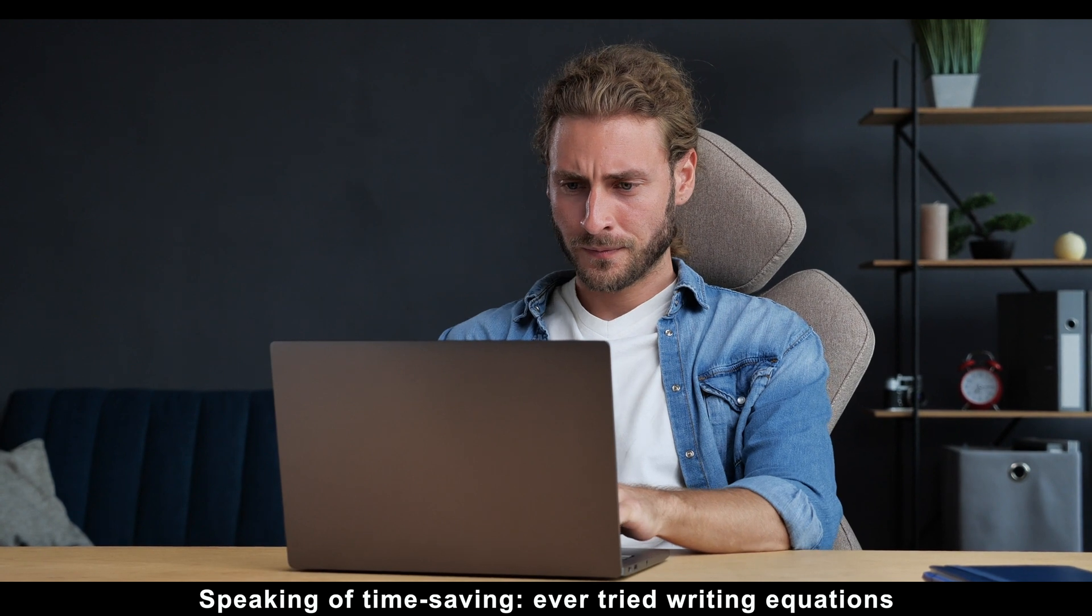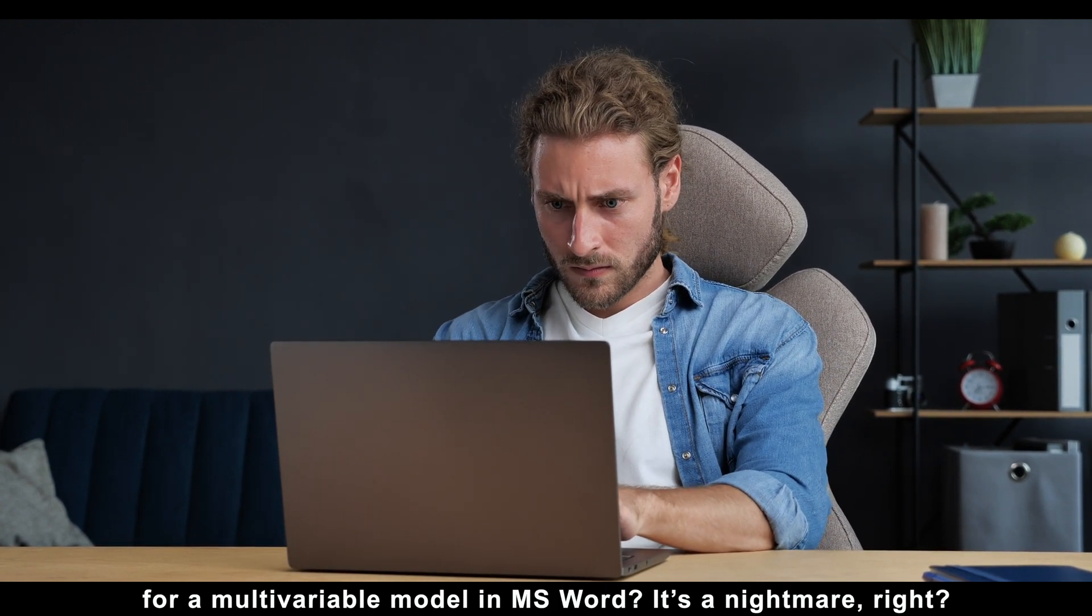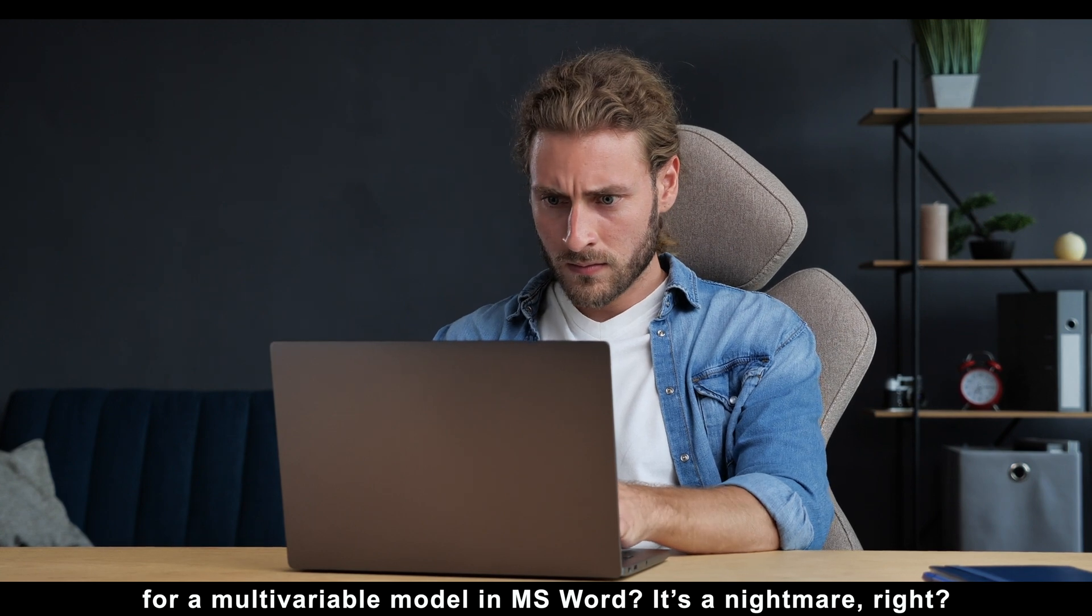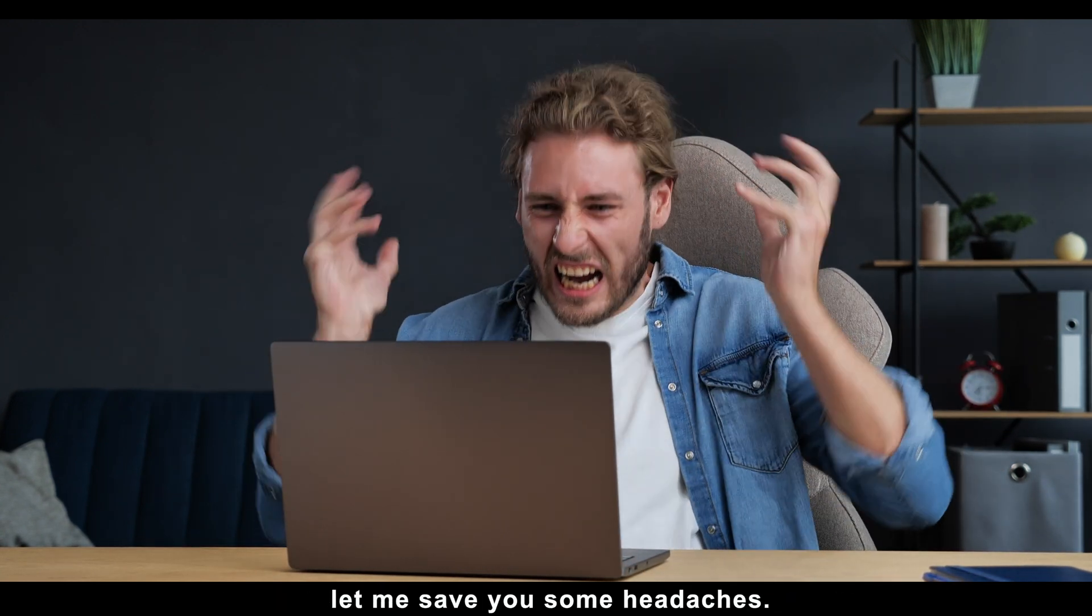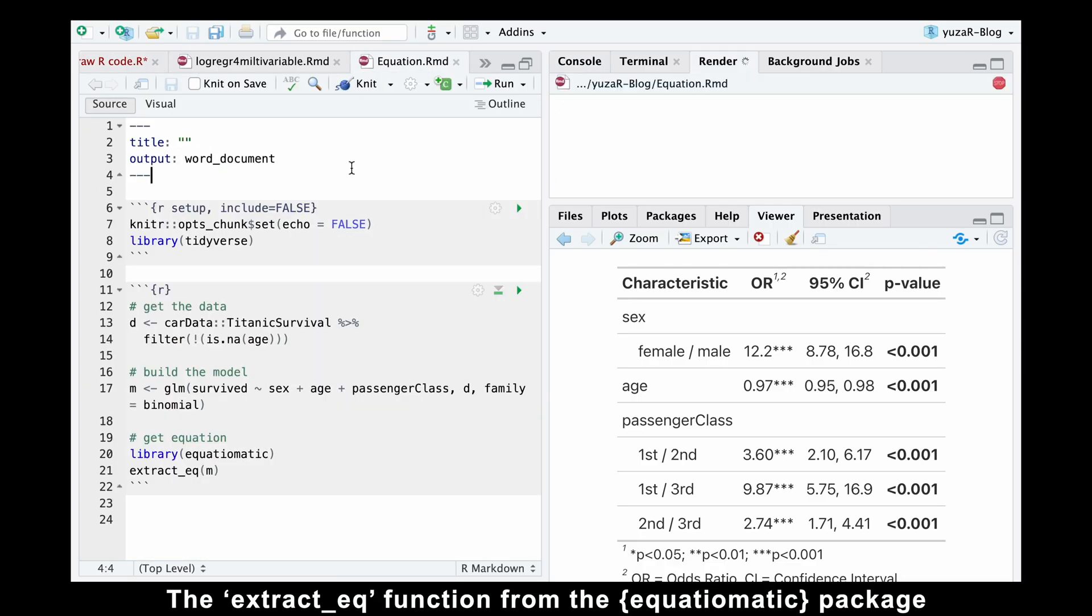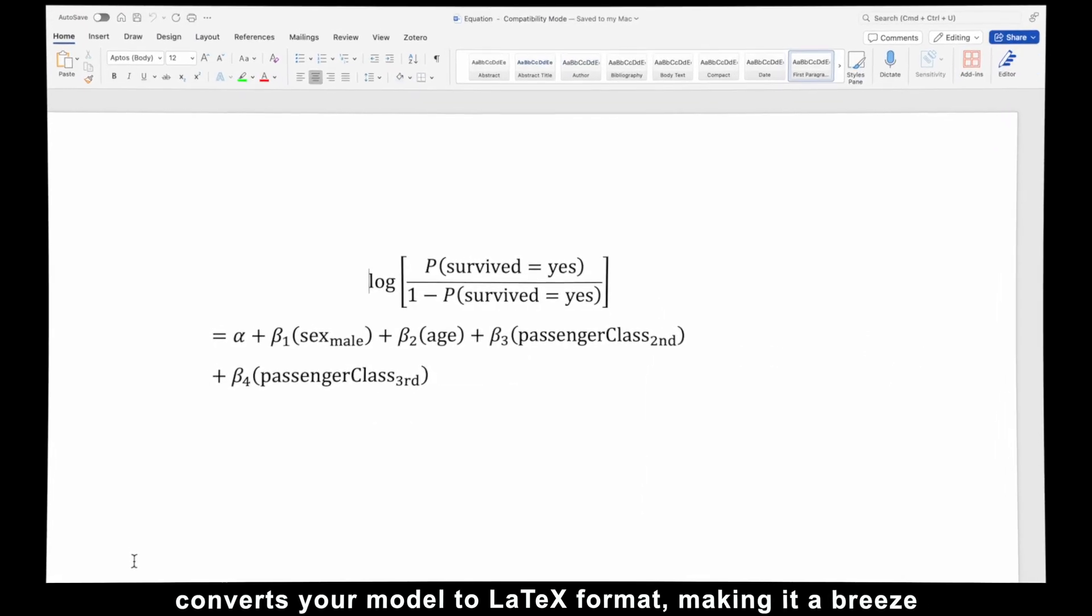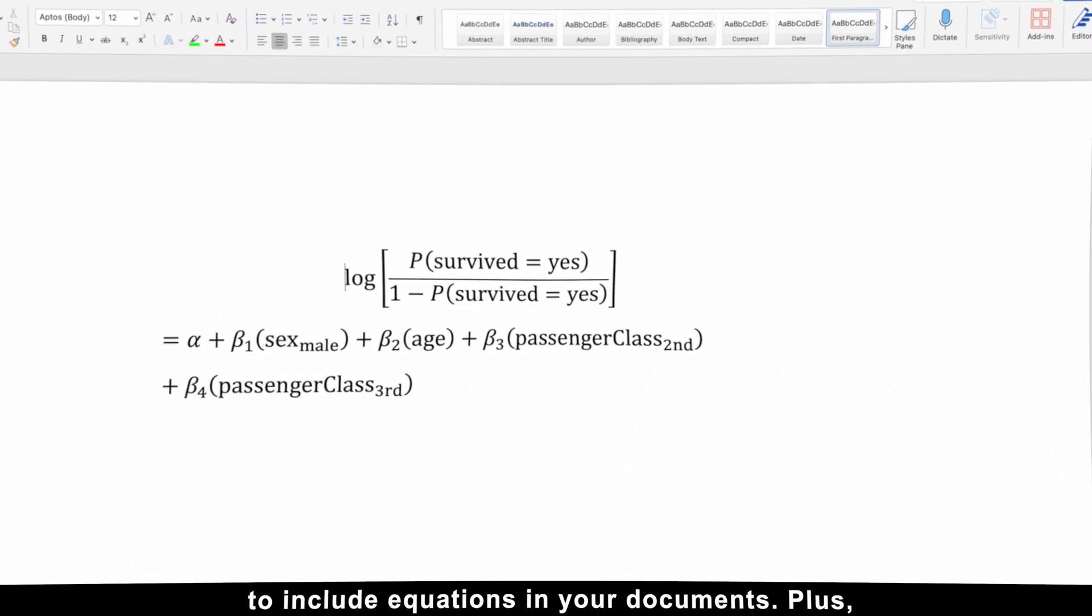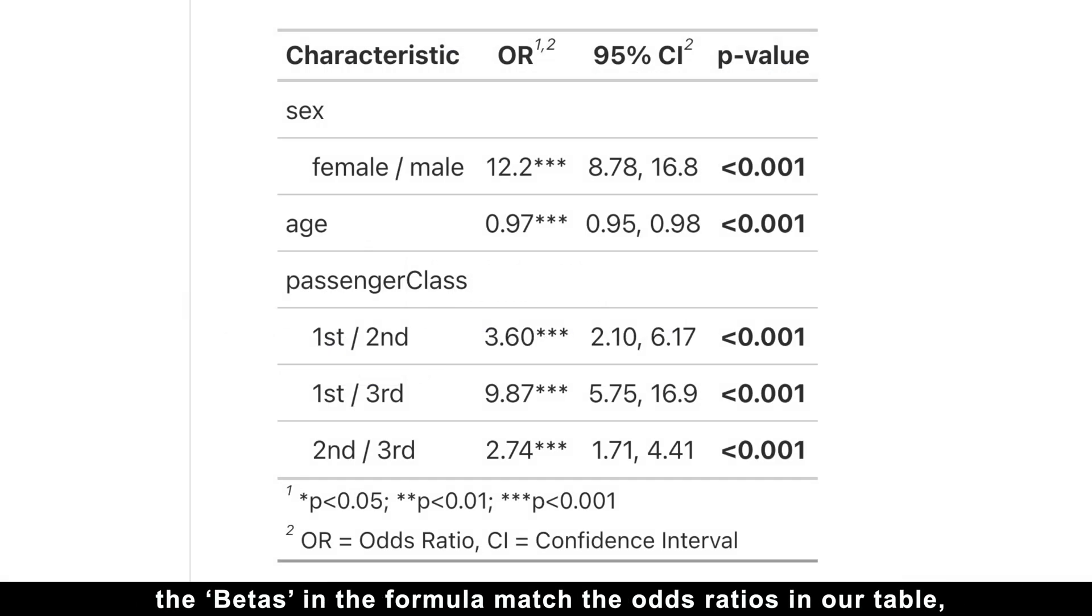Speaking of time-saving, ever tried writing equations for a multivariable model in Microsoft Word? It's a nightmare, right? Before we dive into interpreting model results, let me save you some headaches. The extract_eq function from the equatiomatic package converts your model to LaTeX format, making it a breeze to include equations in your documents. Plus, the betas in the formula match the odds ratios in our table, which we'll break down next.